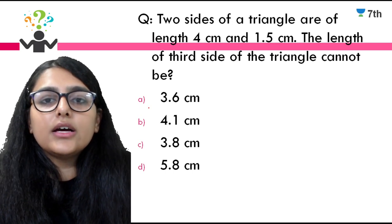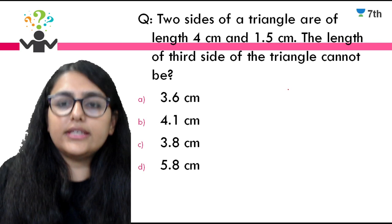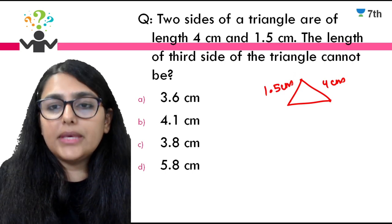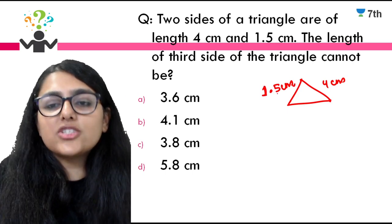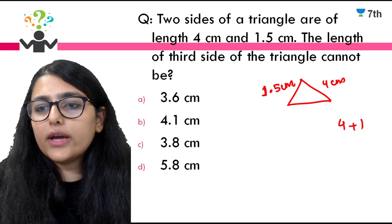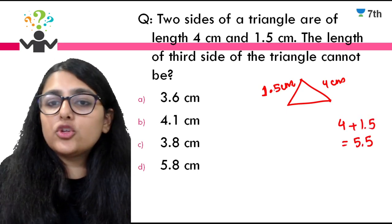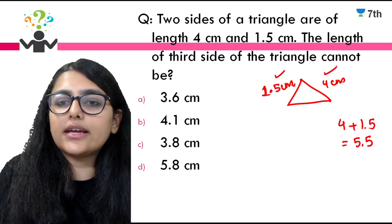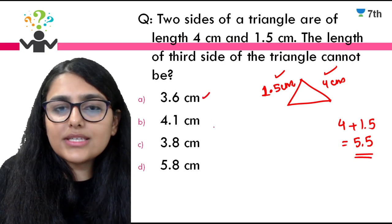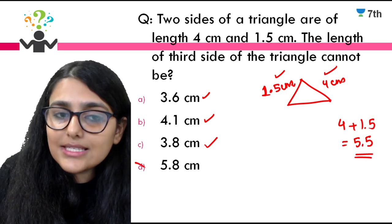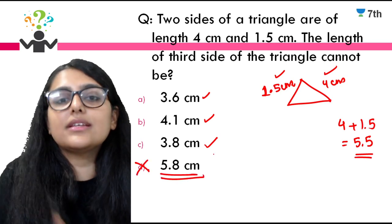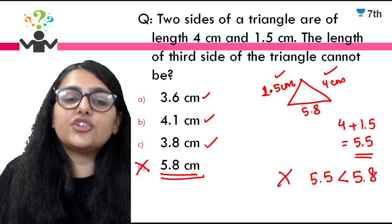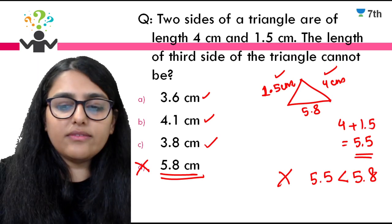Two sides of a triangle are 4 cm and 1.5 cm. The length of the third side cannot be: adding 4 + 1.5 = 5.5. The third side must be less than 5.5 cm. Options 3.6, 4.1, and 3.8 are all less than 5.5, so they are possible. But 5.8 cannot be the length of the third side, because 5.5 < 5.8 — such a triangle is not possible.